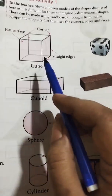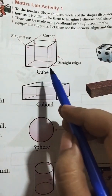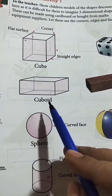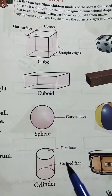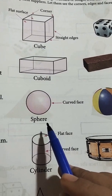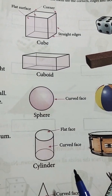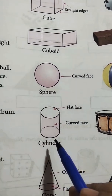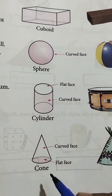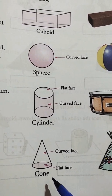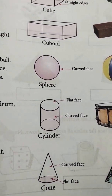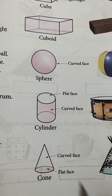So students, this is cube, this is cuboid, this is sphere, this is cylinder, and this is cone. Now come to the exercise.